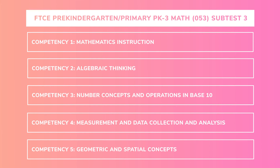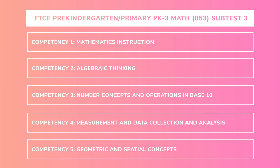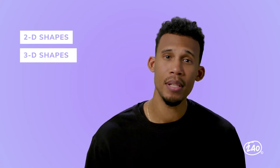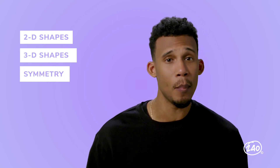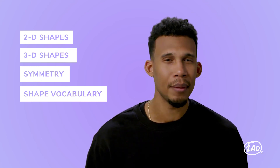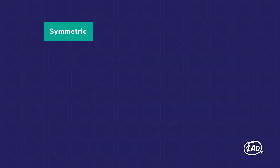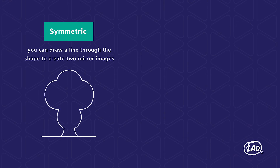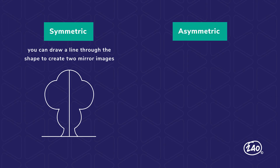We've got so many more videos to help you prepare for your exam — use the link in the description below. Last stop is geometric and spatial concepts, which is a fancy way of saying shapes and where they are in space. This last competency will show up in about seven questions on your exam. You'll need to know the basic 2D and 3D shapes and their properties, what it means to be symmetrical or congruent, and some basic shape vocabulary like line, angle, and plane.